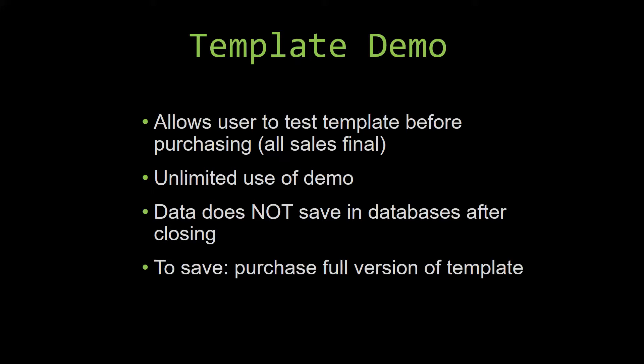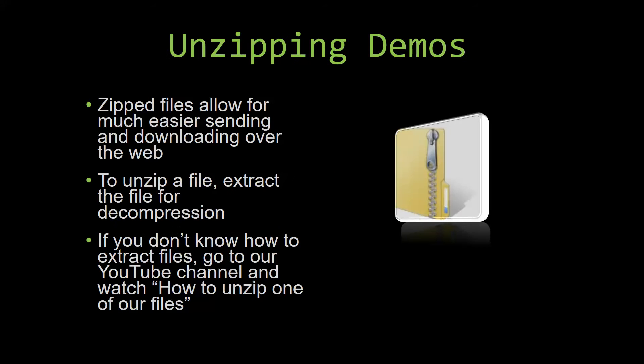Upon downloading a demo for one of our templates you will have to unzip the downloadable file. Zip files make it much easier to send and download large files over the web. Unzipping a file is a very simple step — all you have to do is extract the file so that you have access to the uncompressed file. If you do not know how to unzip a file, check out our YouTube channel and watch the 'how to unzip one of our files' video tutorial. The link to that video will be in the description of this video.